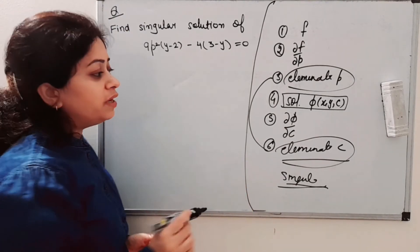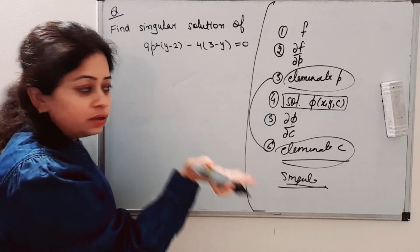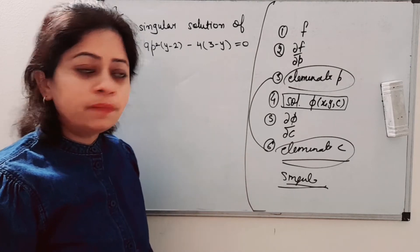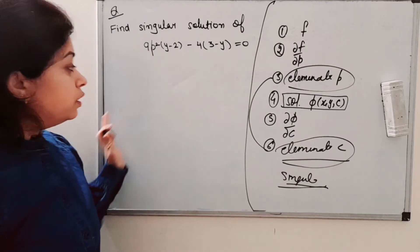If we get only one solution, then we do not need to go further after step 3. These were some steps for finding singular solution. Now we have this differential equation. What do we need to do?